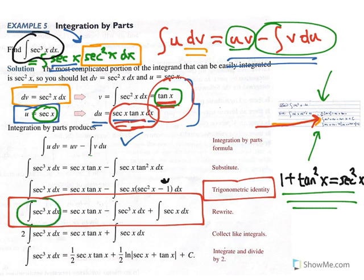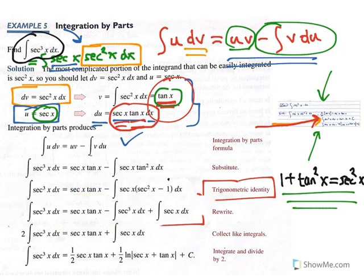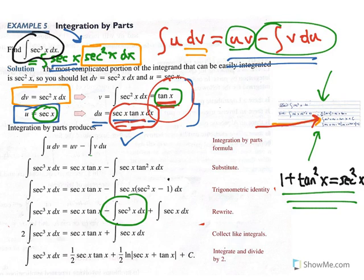We have our original integral, and we see that negative one times our original integral appears on the right side of the equation. We now solve for it using algebra, moving the integrals to one side. We add the indefinite integral of secant cubed x dx to both sides. On the right side it gives zero, and on the left side it gives 2 times the indefinite integral of secant cubed x dx.